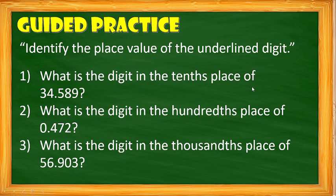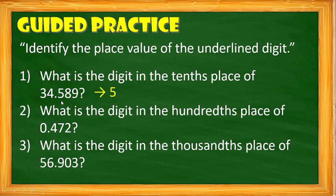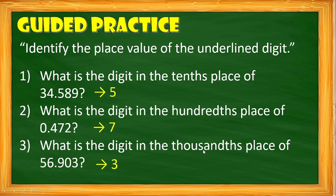I hope you already know how to identify the place value of the underlined digit or find the digit given the place value. Let's identify the digit in the tenths place — the first digit to the right of the decimal point — the answer is 5. What is the digit in the hundredths place? The second digit to the right of the decimal point: 1, 2 — the answer is 7. What is the digit in the thousandths place? The third digit to the right of the decimal point — the answer is 3.